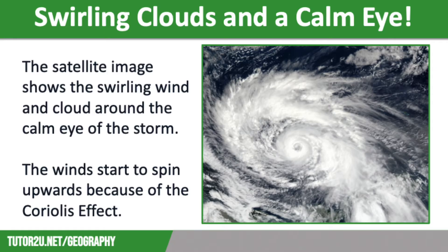In the last video we talked about how tropical storms form and develop. The winds start to spin upwards due to the Coriolis effect, which is the effect of the Earth's axis. And in the centre of the storm there is the eye, where the conditions are calm. This is formed by the cool air sinking, creating a zone of high pressure, leading to calm, drier conditions.